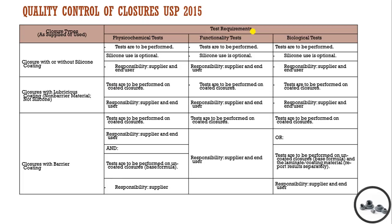Next is quality control of closures according to USP. This table indicates the type of tests to be performed for different types of closures — for example, closures with or without silicone coating (siliconization), closures with lubrication coating, or closures with barrier coating. Different physicochemical, functionality, and biological tests are to be performed for different types of closures.